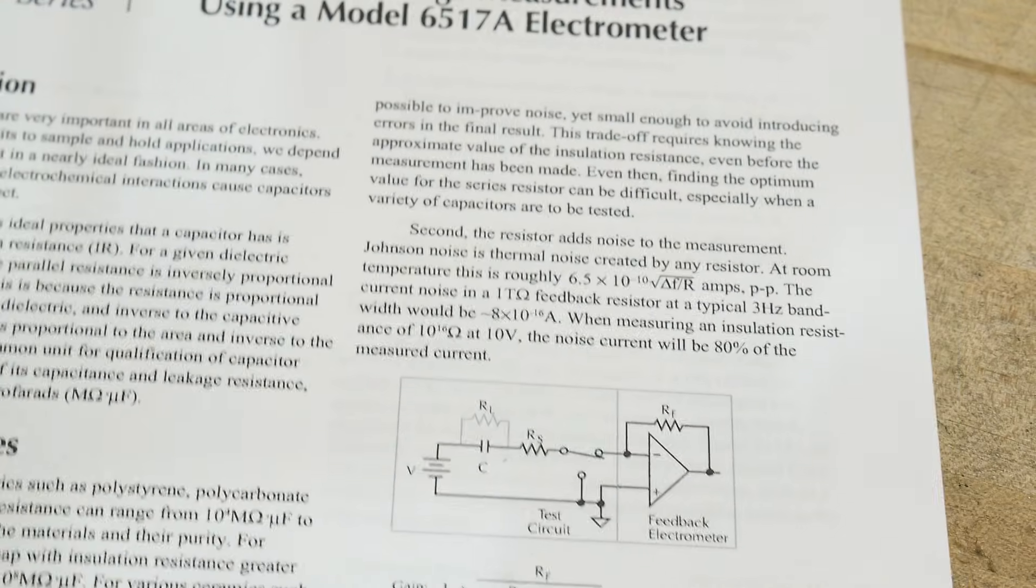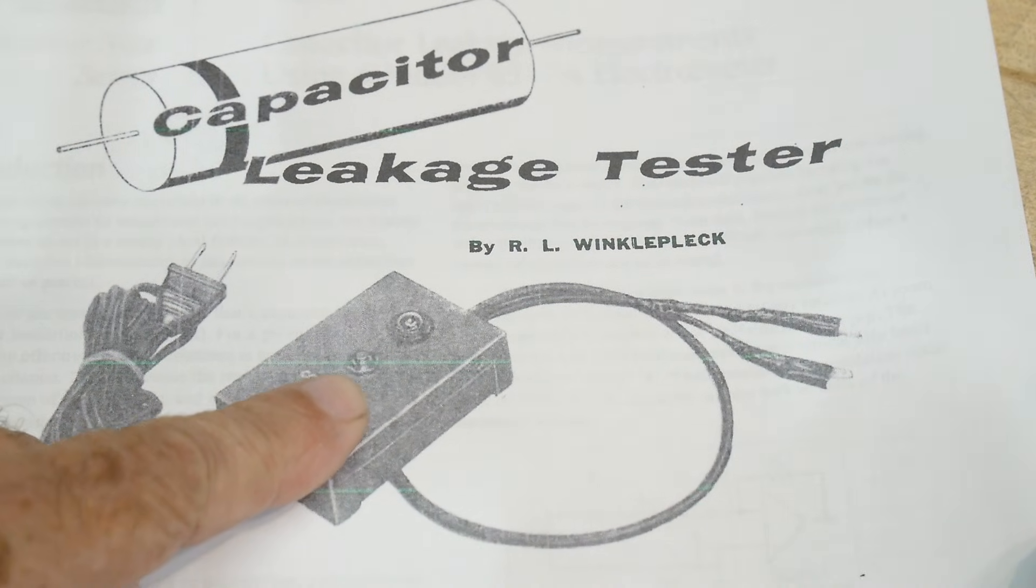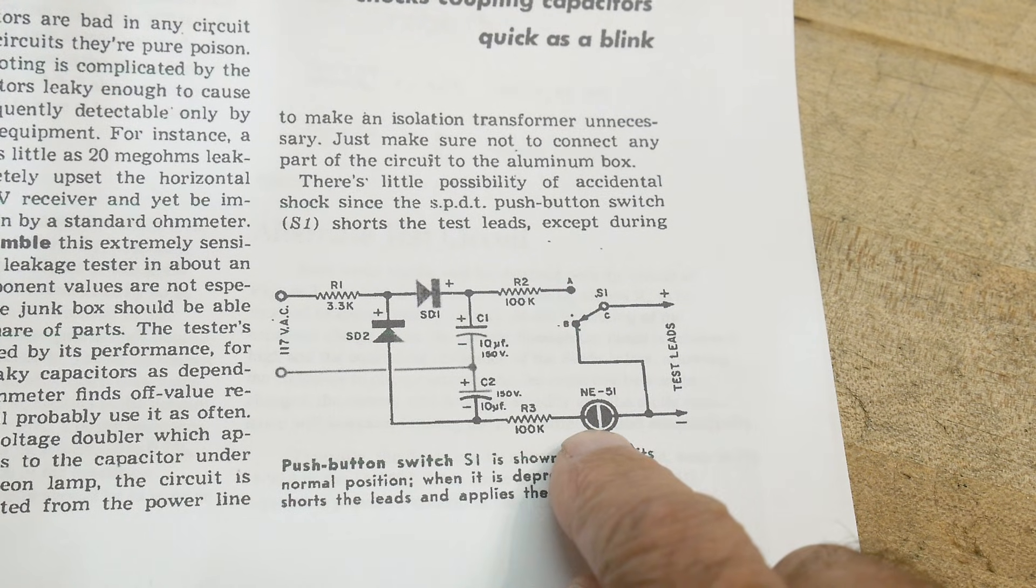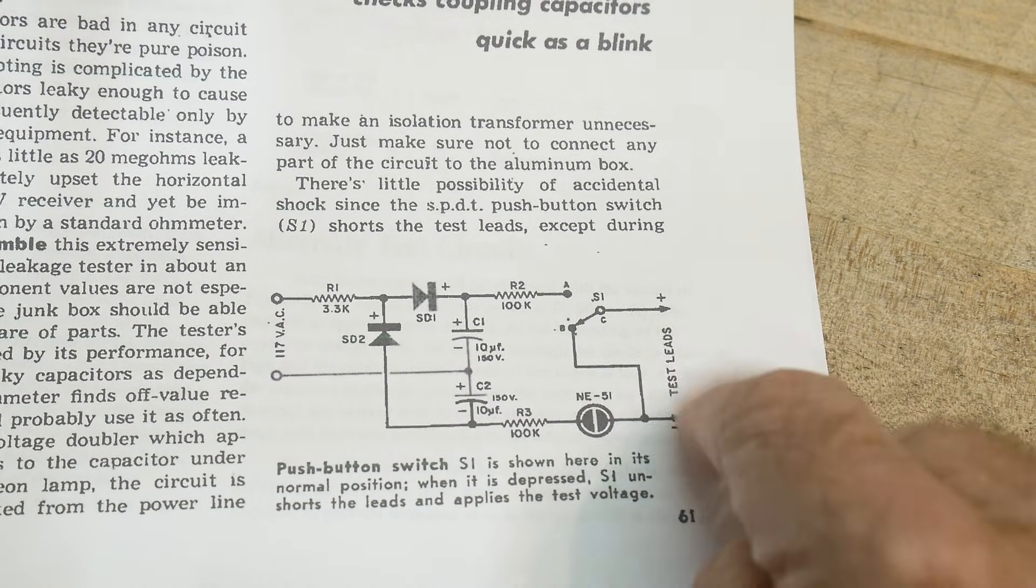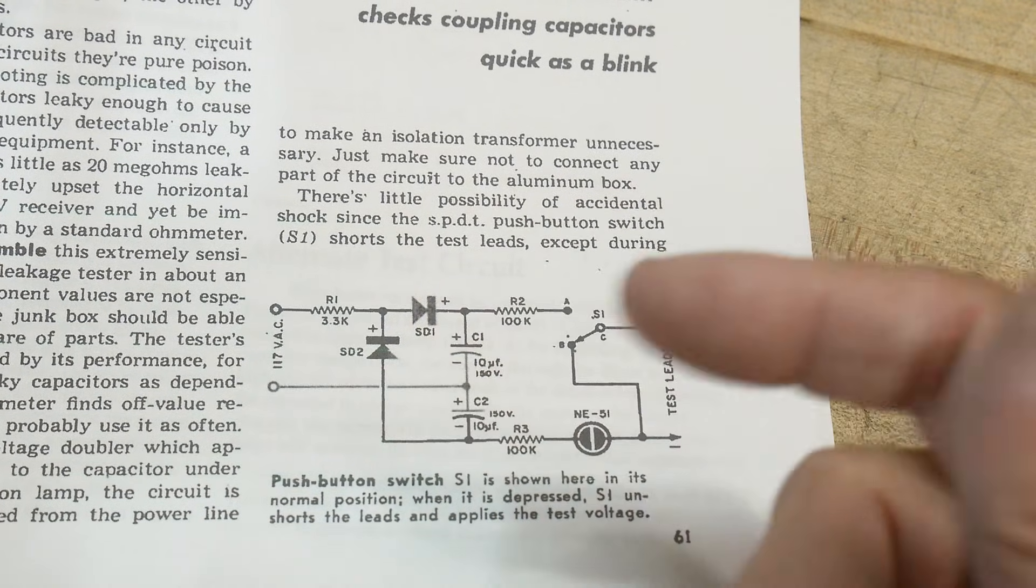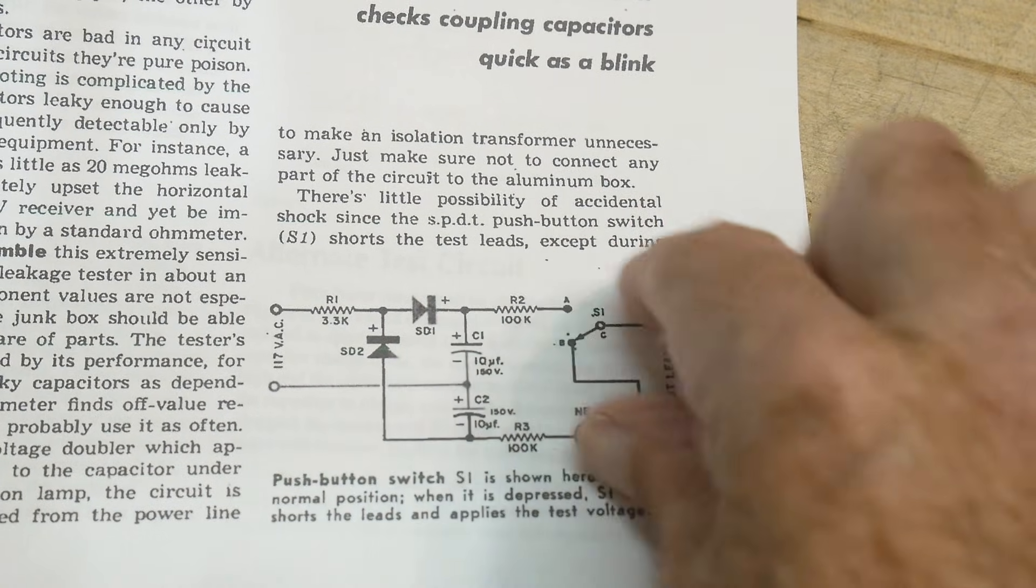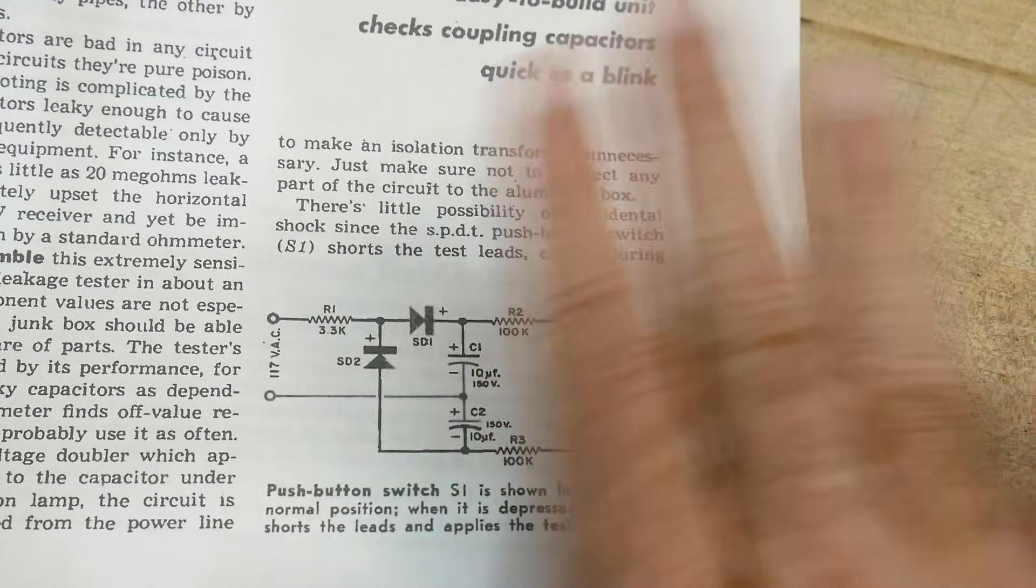People have been testing leakage of capacitors for eons. This is the earliest one I found. Here is the DIY capacitor leakage tester in a nice little box with an LED. Oh wait a minute, they didn't have LEDs back then. They had to use neons. So it's a little neon bulb. Neon bulbs are very sensitive for current. Your test capacitor is out here. You rectify this 120 volts up to 300 volts. So you can test your high voltage. This is a voltage doubler. It gets you to about 250 to 300 volts.